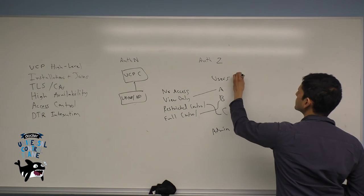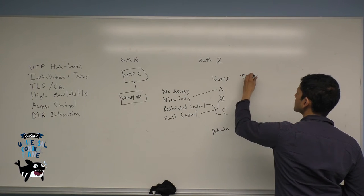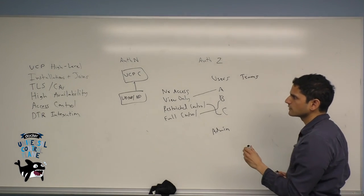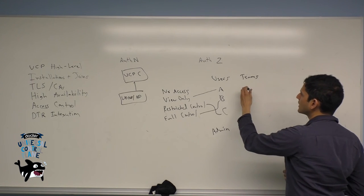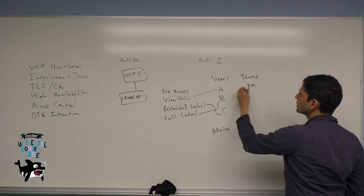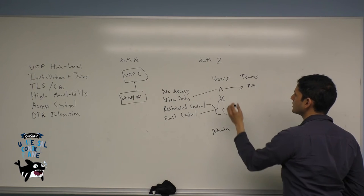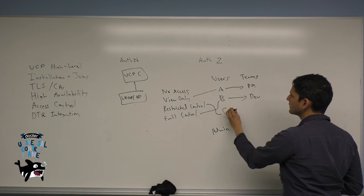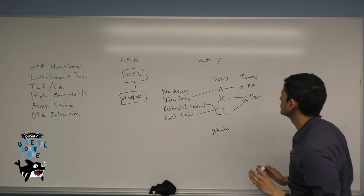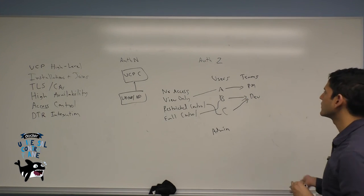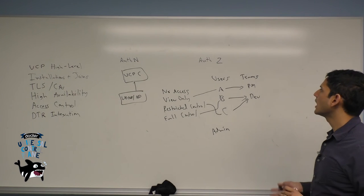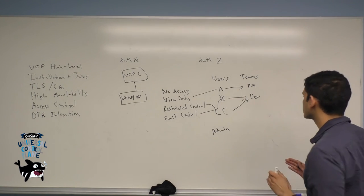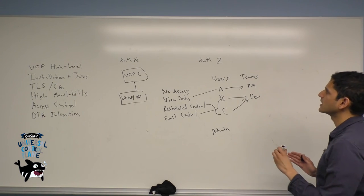The first thing that we do is set teams. Teams consist of groups of users. For example, I might have a team PM, which consists of user A, and I might have team DEV, which consists of users B and C. On its own, teams aren't very useful except as an organizational construct. However, you can connect teams to container access control through the form of labels.